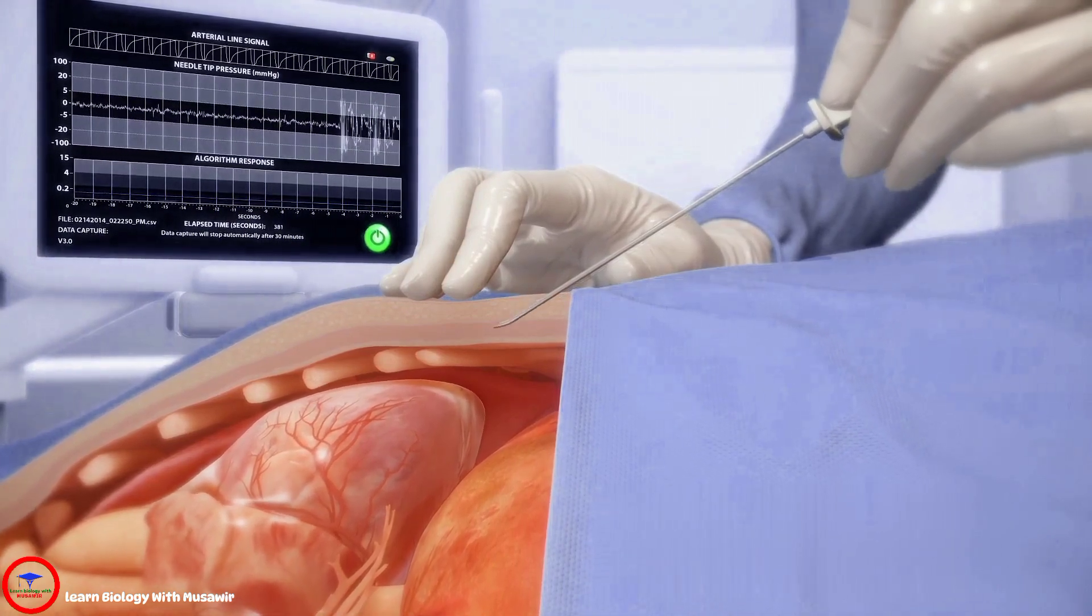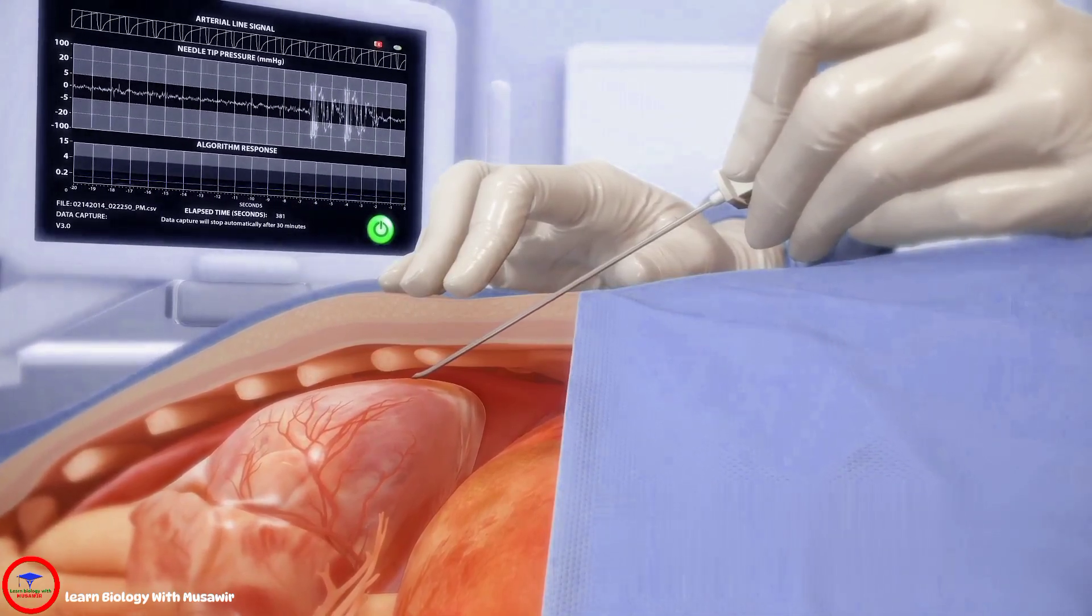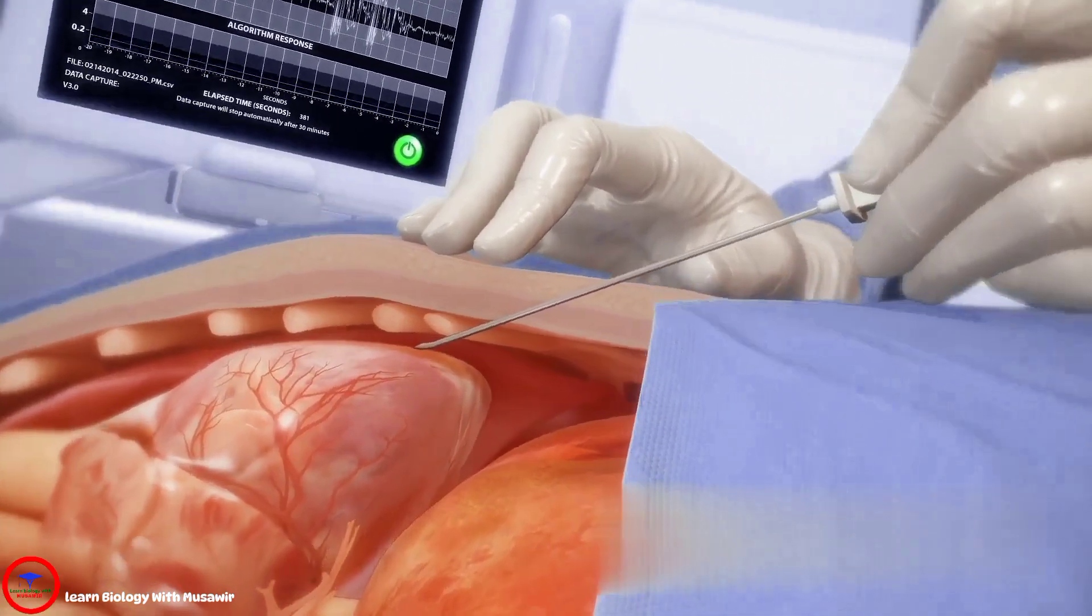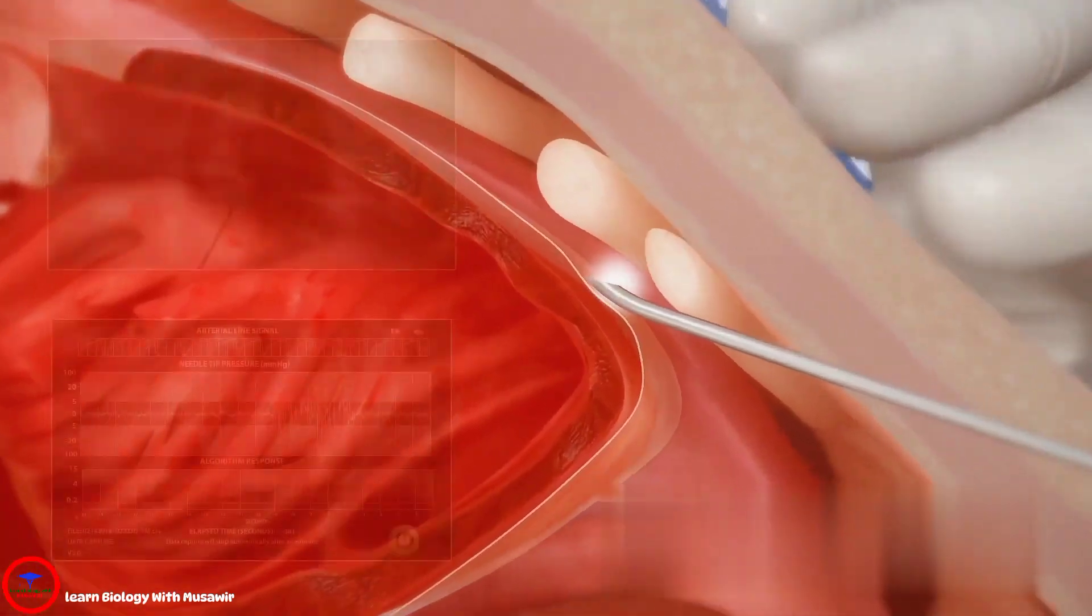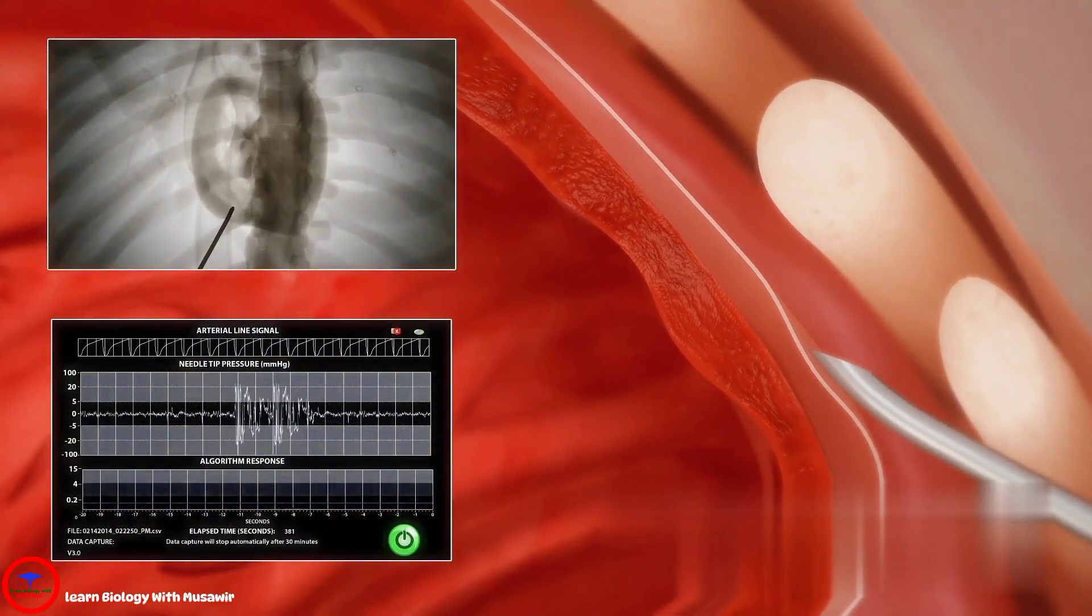The needle is advanced to the target site and needle tip location is indicated by an amplitude change on the monitor. A contrast puff under fluoroscopy shows tenting of the pericardial sac prior to insertion.